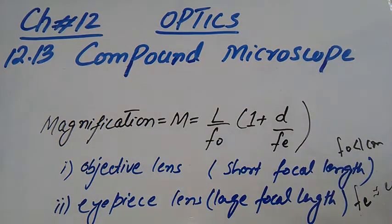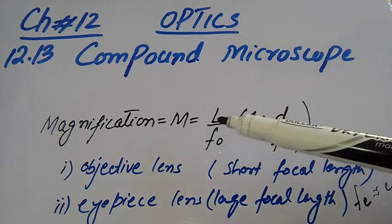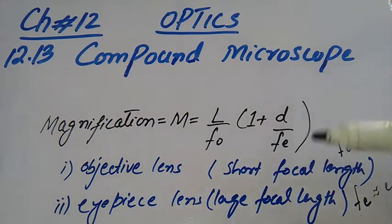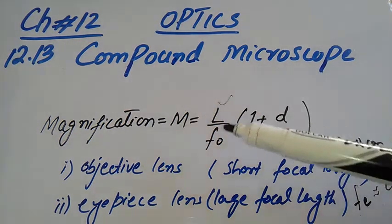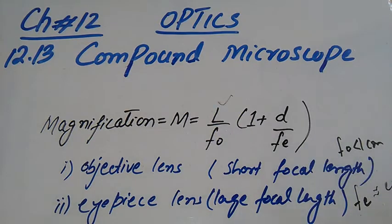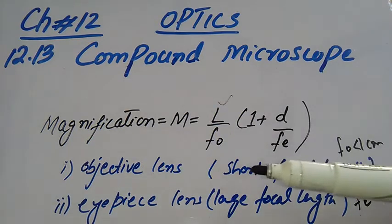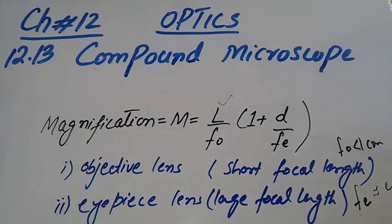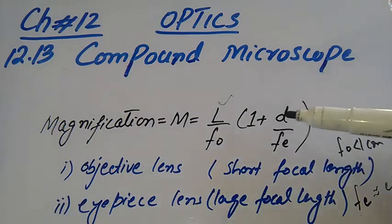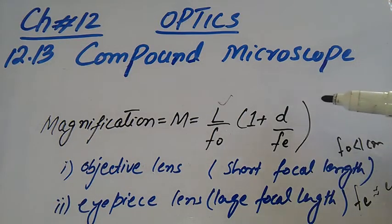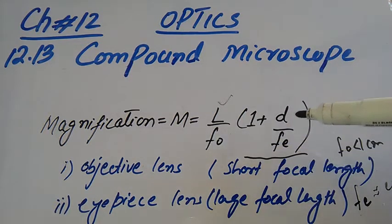For the magnification formula here, M is equal to L divided by F₀, multiplied by 1 plus D divided by Fₑ. L is basically the length of the microscope tube.